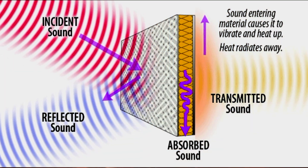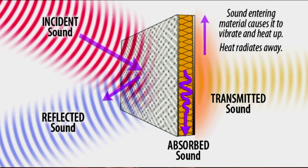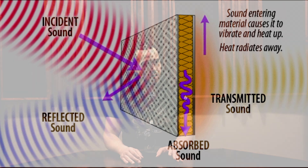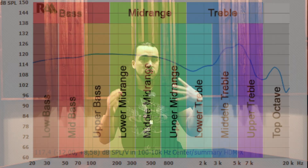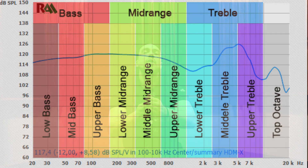Generally, acoustic panels and bass traps have a similar purpose, and that's to absorb acoustic energy. However, bass traps are designed to be more attenuated towards low end, and acoustic panels can be designed to attenuate either just the treble, or the treble and mid, or the treble, mid, and bass, depending on the thickness and the density of the acoustic panel.